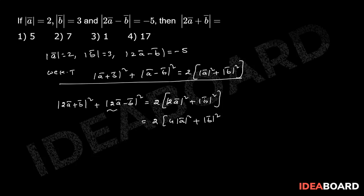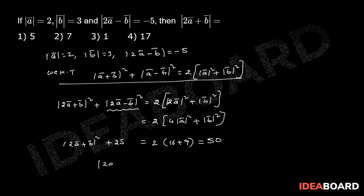Given modulus of 2a bar minus b bar is minus 5, so modulus of 2a bar plus b bar whole square plus 25 equals 2 into 16 plus 9, that equal to 50. So modulus of 2a bar plus b bar whole square equals 25, modulus of 2a bar plus b bar equals 5. The correct answer is the first option.